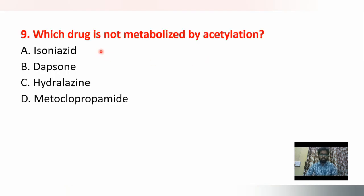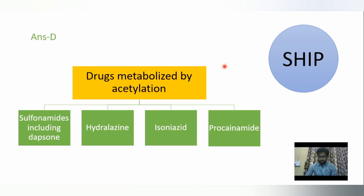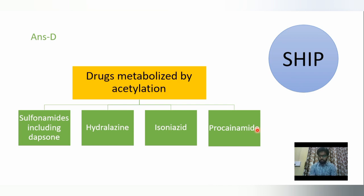Next question: which drug is not metabolized by acetylation? Options are isoniazid, dapsone, hydralazine, metoclopramide. Metoclopramide is the drug which is not metabolized by acetylation. To remember the drugs that are metabolized by acetylation, use the mnemonic SHIP: S = sulfonamides including dapsone, H = hydralazine, I = isoniazid, P = procainamide. These four drugs are metabolized by acetylation — a very important question for GPAT.